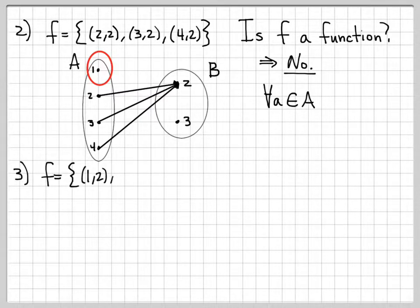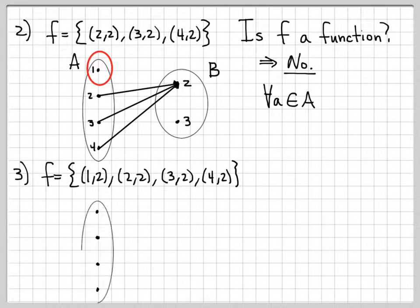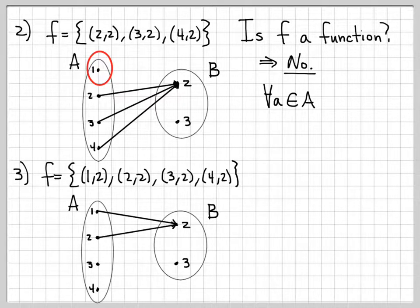Let's do one more example. Let's do (1,2), (2,2), (3,2), and (4,2). If we visualize this with our diagram again, we draw from 1 to 2, we draw from 2 to 2, we draw from 3 to 2, and draw from 4 to 2. And we ask ourselves, is this a function? And the answer in this case is yes, it is indeed a function.